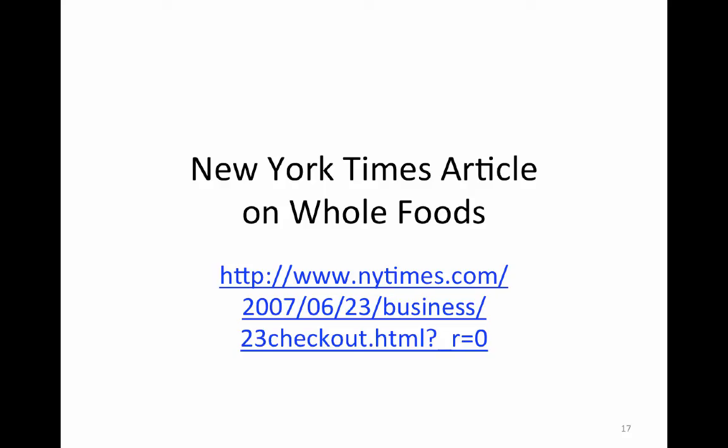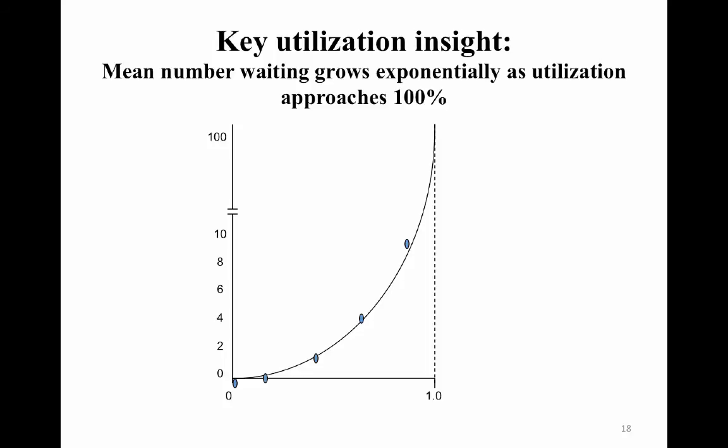There's a good article that talks about what Whole Foods did and how they benefited from that single-queue model. A key insight is that utilization, as it approaches 100%, causes waiting to grow exponentially. That's why I said 85% is a good target utilization rate in general.